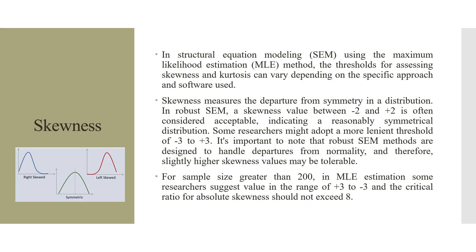Skewness: In structural equation modeling using maximum likelihood estimation, the thresholds for assessing skewness and kurtosis can vary depending on the specific approach and software used. Skewness measures the departure from symmetry in the distribution. In robust SEM, a skewness value between minus 2 and plus 2 is often considered acceptable, indicating a reasonably symmetrical distribution. Some researchers adopt more lenient thresholds of minus 3 to plus 3. Robust SEM methods are designed to handle departures from normality, so slightly higher skewness values may be tolerable.